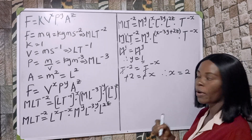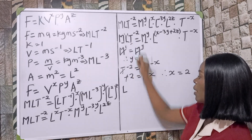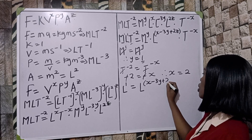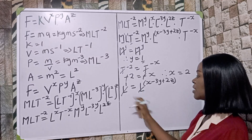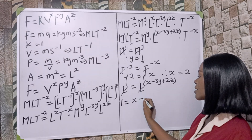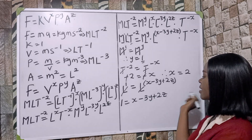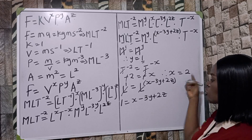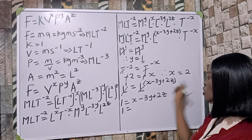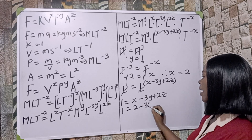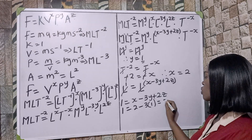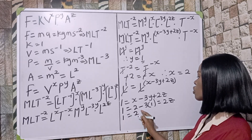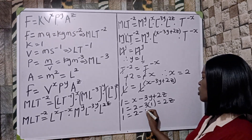Now equating the powers of L: L¹ equals L^(x − 3y + 2z). Cancelling L, we get one equals x minus 3y plus 2z. Substituting x equals two and y equals one: one equals two minus three times one plus 2z, which gives one equals two minus three plus 2z.